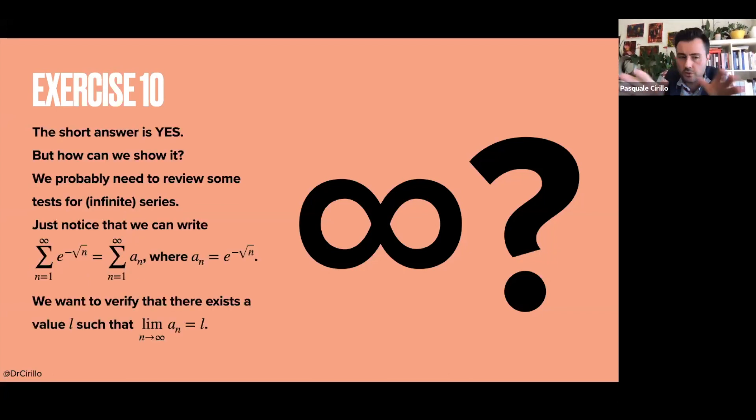So the answer is yes. So there is convergence. Okay, fine. This is an infinite series. Why? Because we can write that if we substitute e to the power minus square root of n with quantity a_n, we can easily write our series as the infinite sum of a_n.